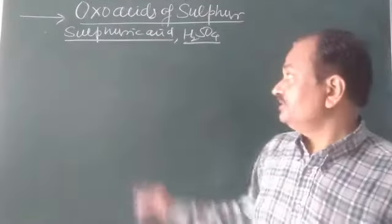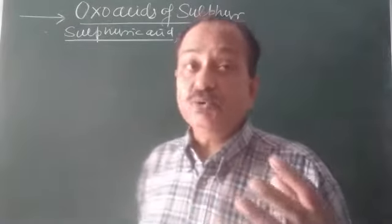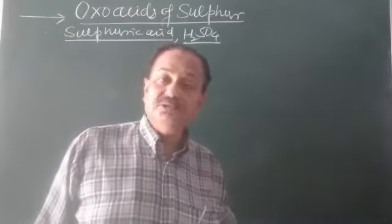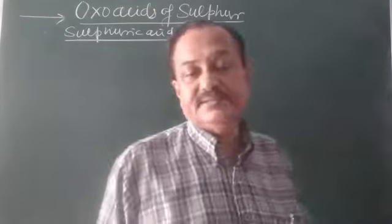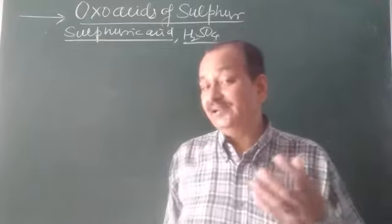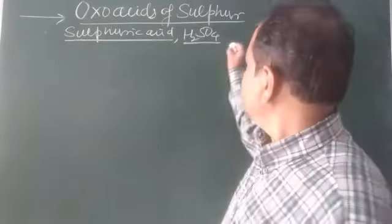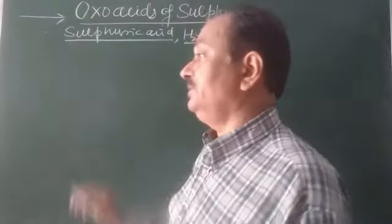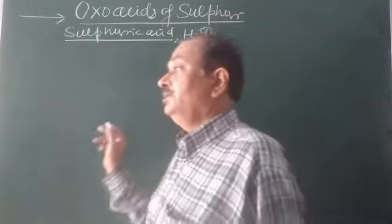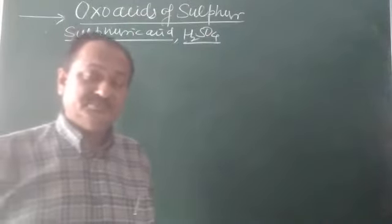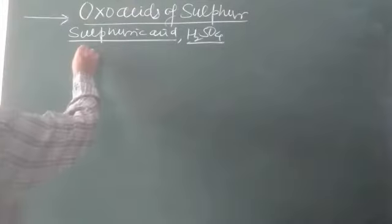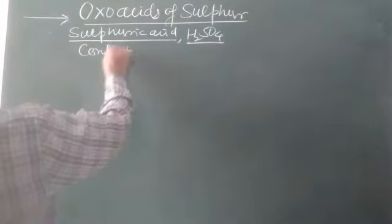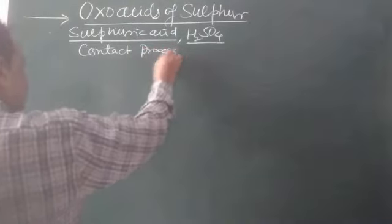Now we will look at a very important oxo acid — sulfuric acid. It is one of the most important chemicals in the world, used in metallurgy, acid accumulators, metal processing, refining of petroleum, and many other applications. It is prepared by a very significant process called the contact process.